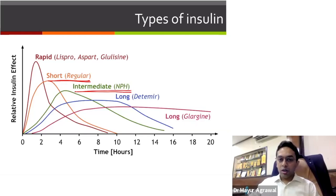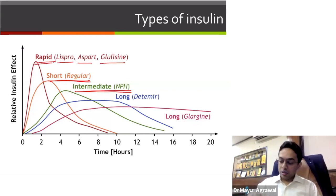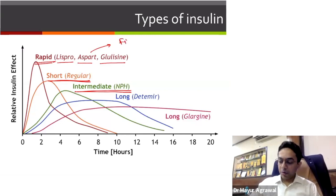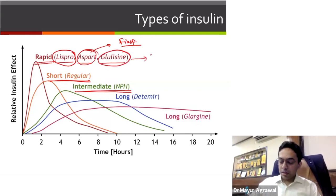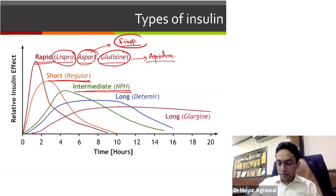Then we have analogs. In analogs, we have short-acting or rapid-acting: Lispro, Aspart, and Glulisine. Aspart is further modified into faster-acting Aspart, which comes by the name FIASP, whereas the original Aspart comes as Novorapid. Lispro comes as Humalog and Iglucent. Glulisine comes as Apidra. These are produced by different companies. The latest, FIASP, works very fast — it starts working within two minutes and can be given even after food.